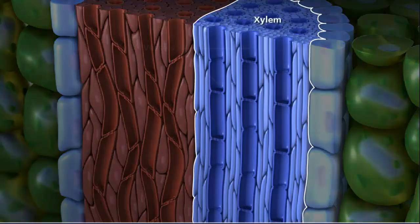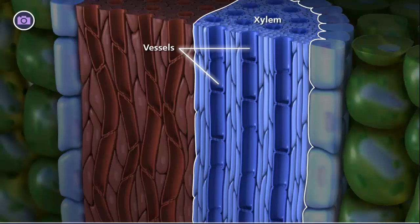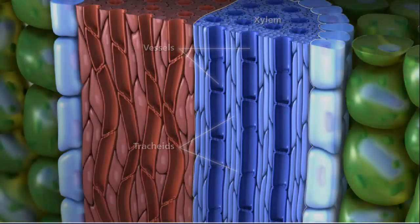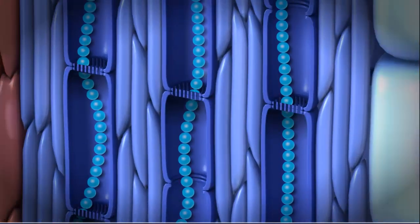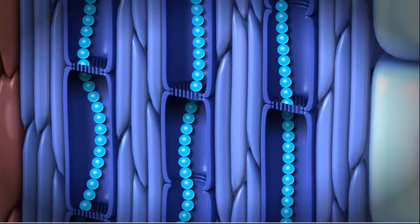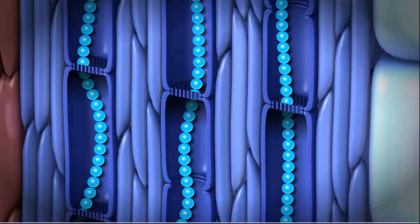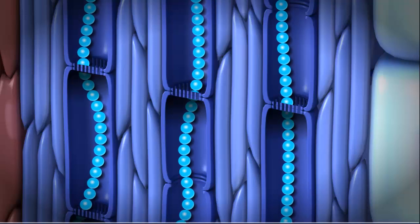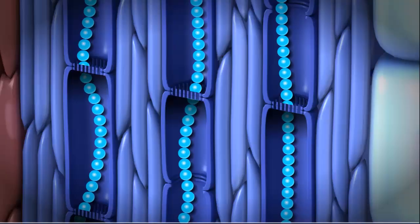Xylem is composed of vessels, which are continuous tubes formed from dead, hollow cylindrical cells arranged end-to-end, and tracheids, which are dead cells that taper as the ends overlap. This arrangement and the polar nature of water molecules allow water to pass in an unbroken stream through the xylem, from the roots, up through the shoot, and into the leaves.